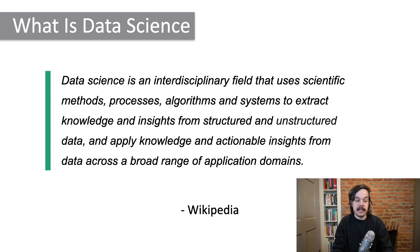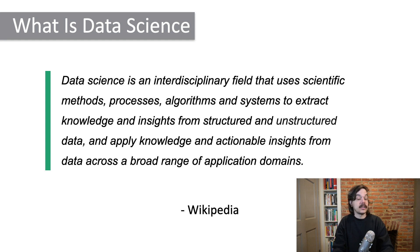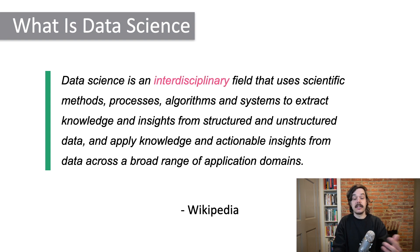The first sentence basically says: data science is an interdisciplinary field that uses scientific methods, processes, algorithms, and systems to extract knowledge and insights from data and apply that knowledge across a broad range of domains. Just that one sentence says a lot but also says nothing — it's too vague. The key takeaway is that data science is very interdisciplinary, and because of that, it's fairly broad.